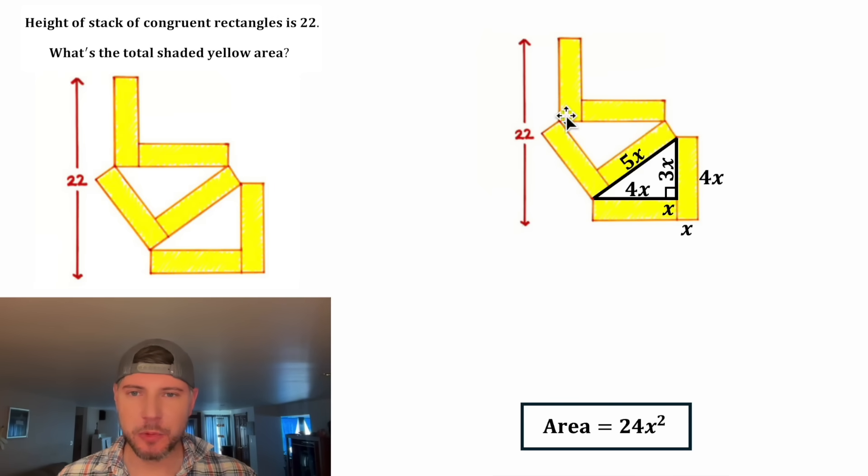But what are we going to do next? We haven't done anything with the 22. So this 22 would be equal to the 4X plus this 4X plus this last little bit right here. Let's call it K. So 4X plus K plus 4X equals 22. And then 4X plus 4X is 8X.